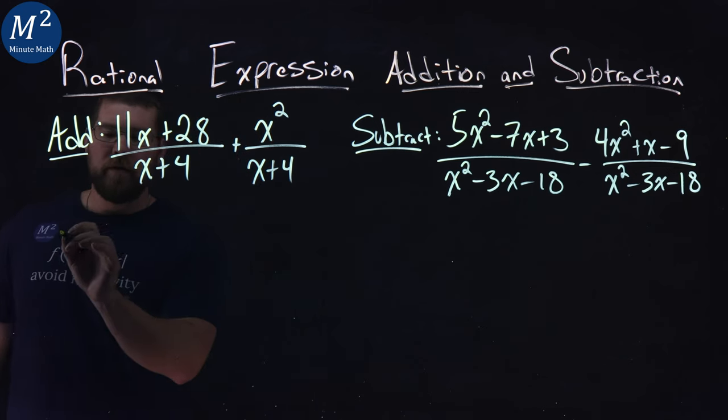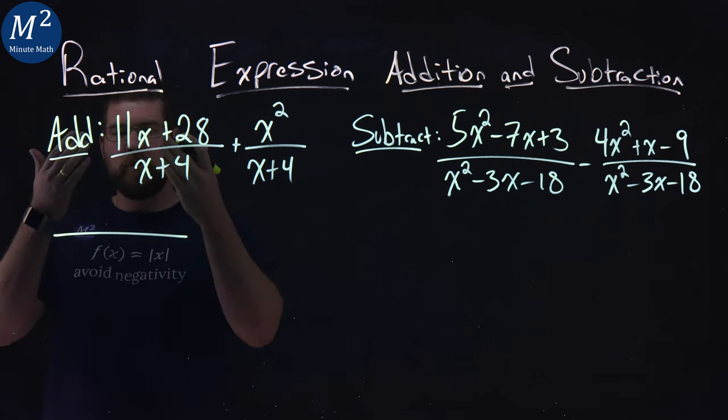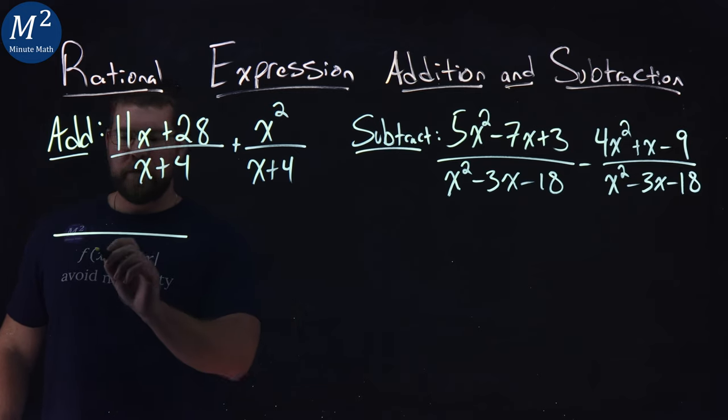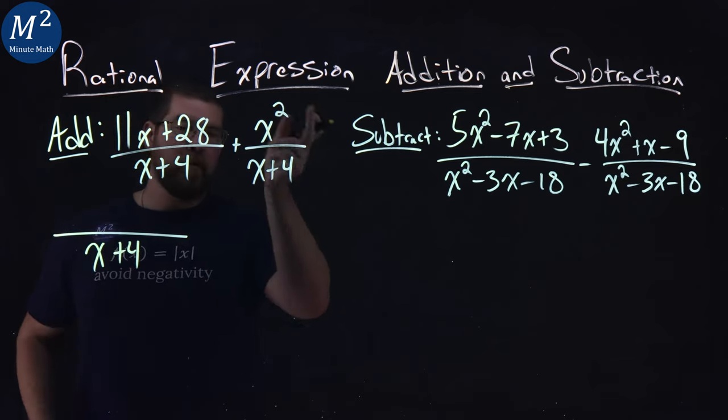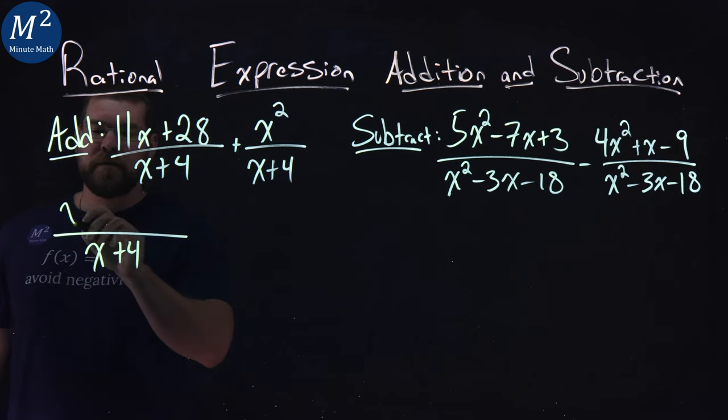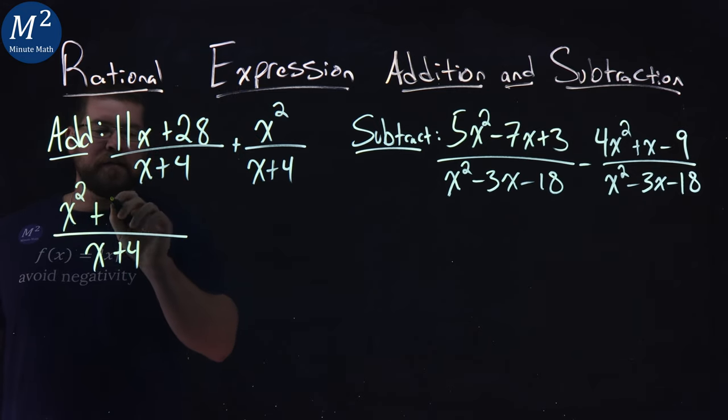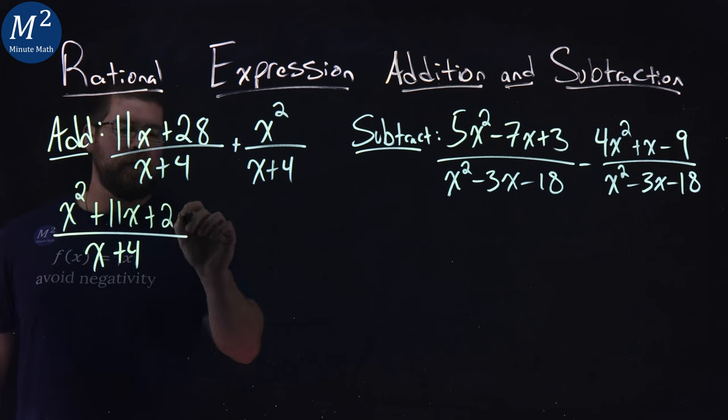So we can write these all under one fractional numerator and denominator. x plus 4 stays in the denominator, and we combine the numerator. Now I'm going to rearrange this to put the x squared first: x squared plus 11x plus 28.